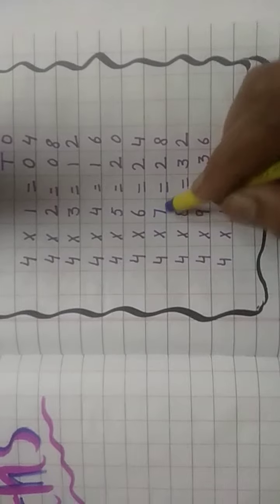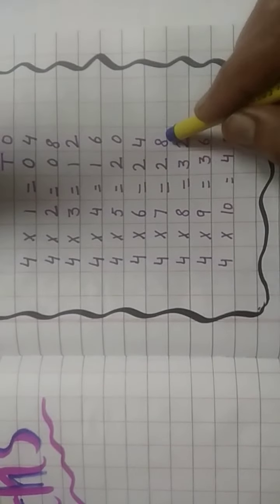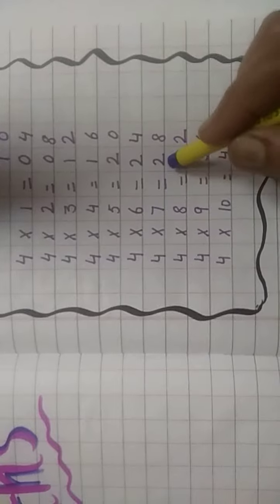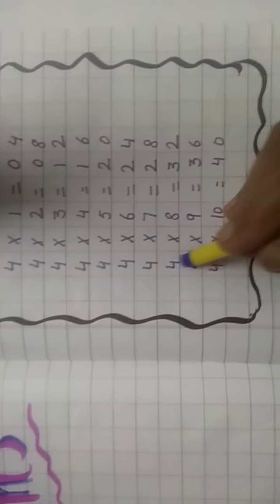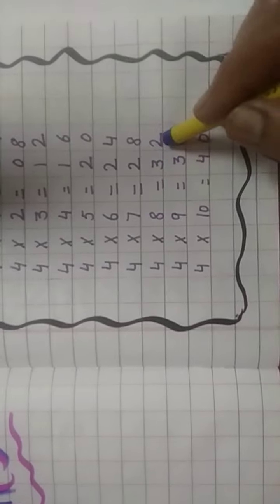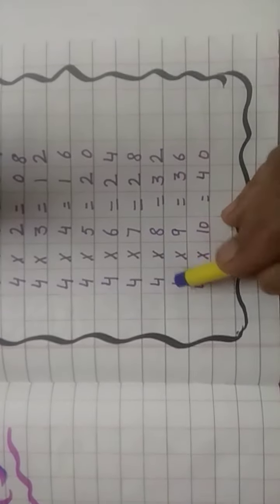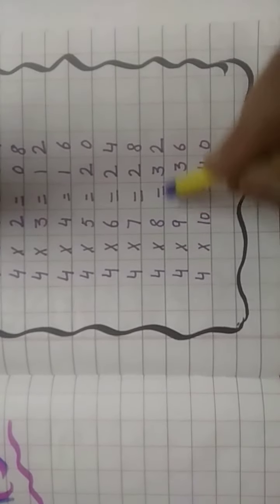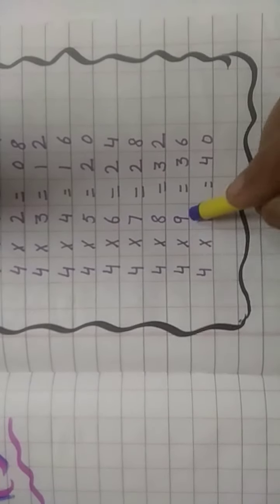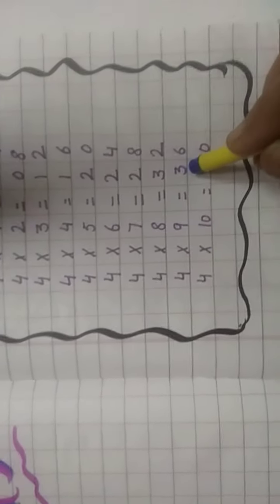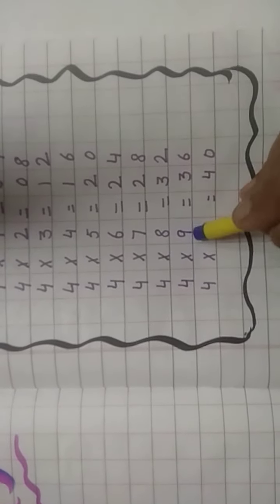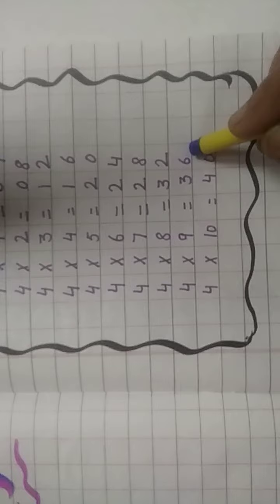Four sevens ka twenty-eight. Four eights ka thirty-two. Four nines ka thirty-six.